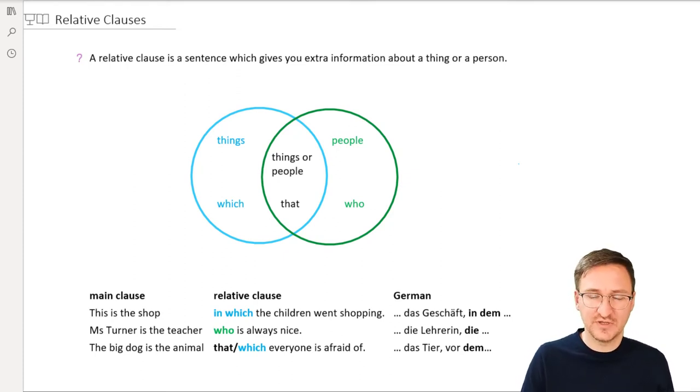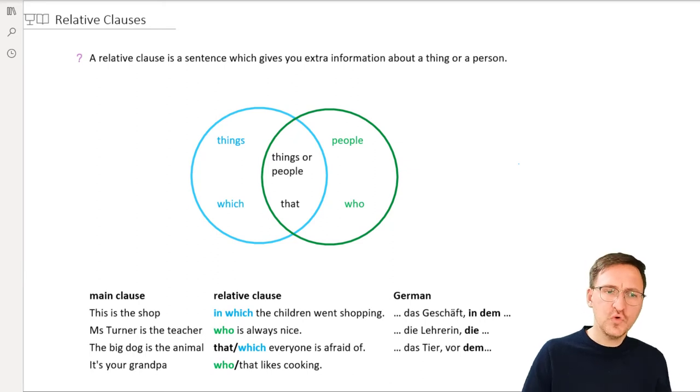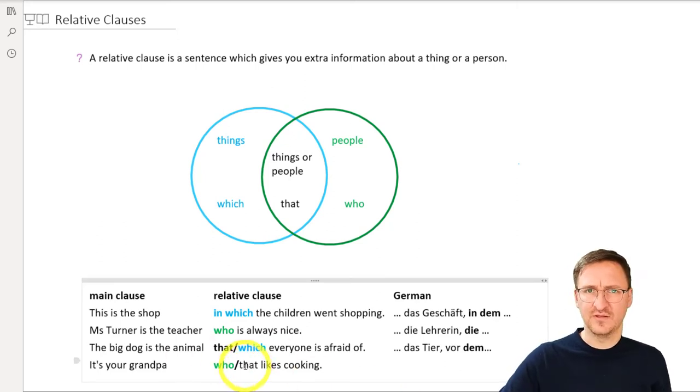And then let's have another example with grandparents again. It's your grandpa who or that likes cooking. But maybe you can see that the that here is not in bold print. So we don't use that for persons very much, I'd say. Dein Opa, der gerne kocht. Now, that's not really too difficult. Let's give it a quick repetition.